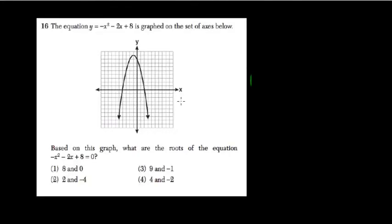Here they want to know what are the roots of this parabola, and the roots are the points at which your parabola crosses the x-axis. So this point is 2, 0, and this point is negative 1, negative 2, 3, 4, 0. So that's it, that's your roots. Your roots are when the parabola crosses 0.